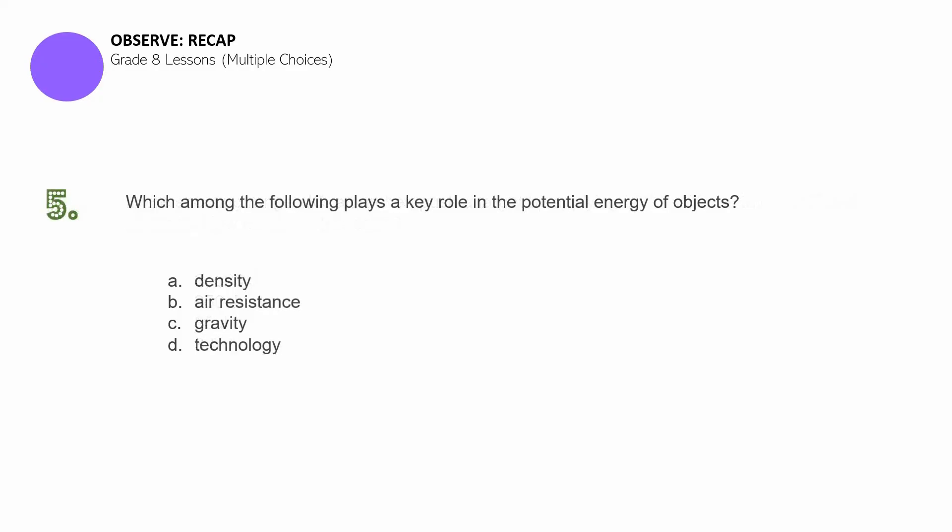Question number five. The last item for this observing recap questions. Which among the following plays a key role in the potential energy of objects? A. Density. B. Air resistance. C. Gravity. D. Technology.